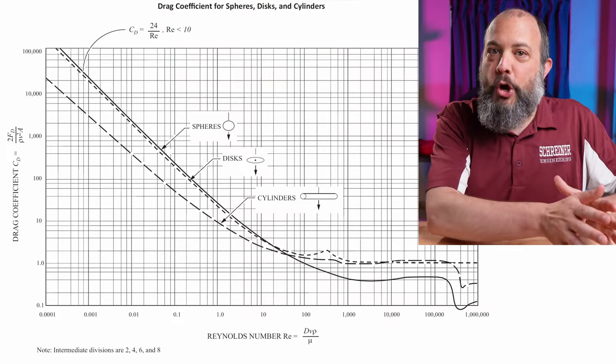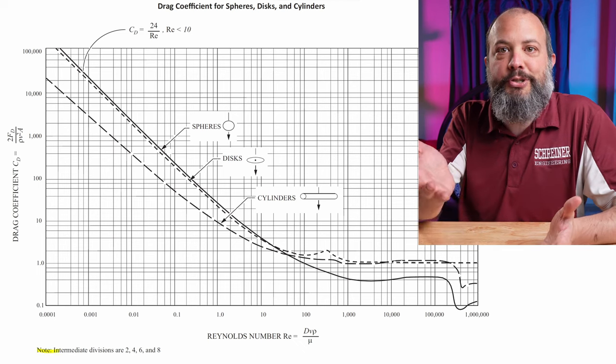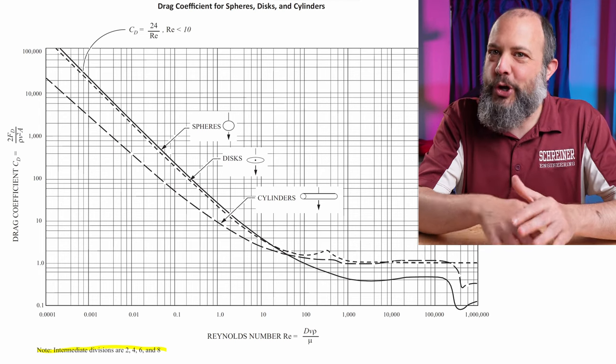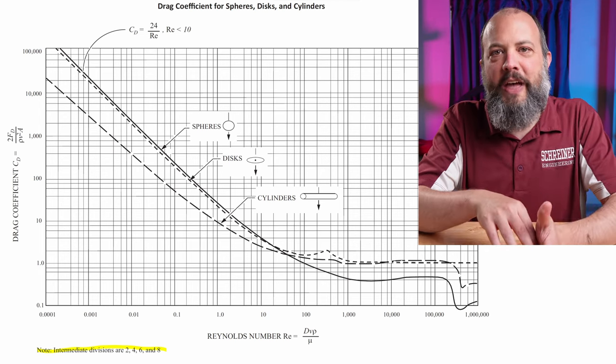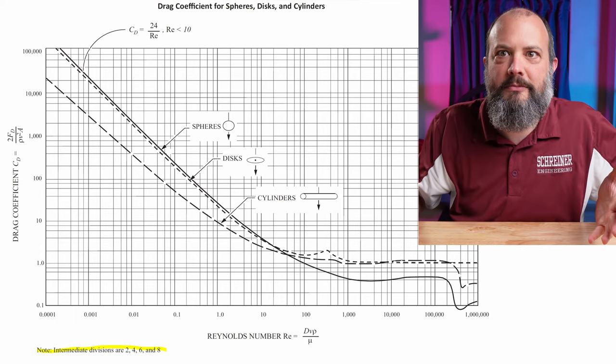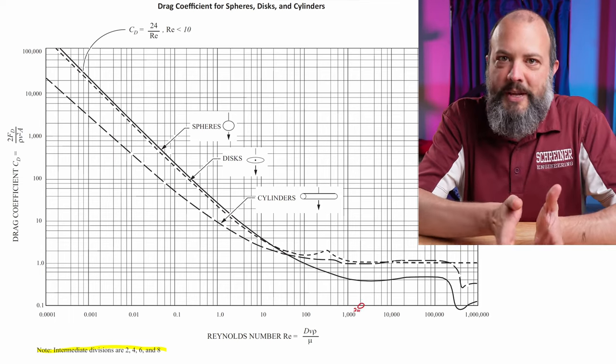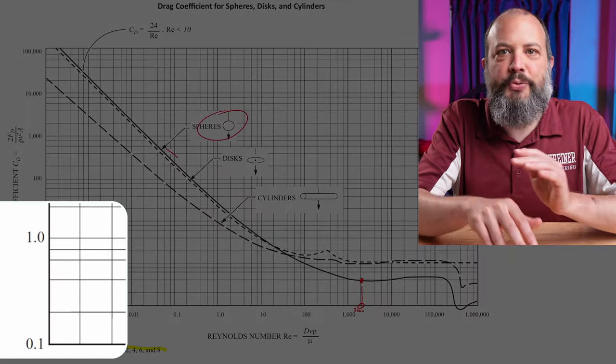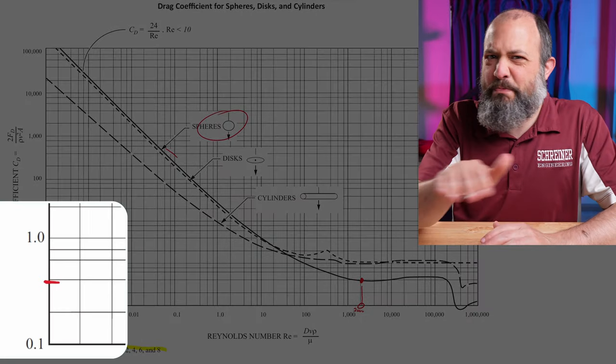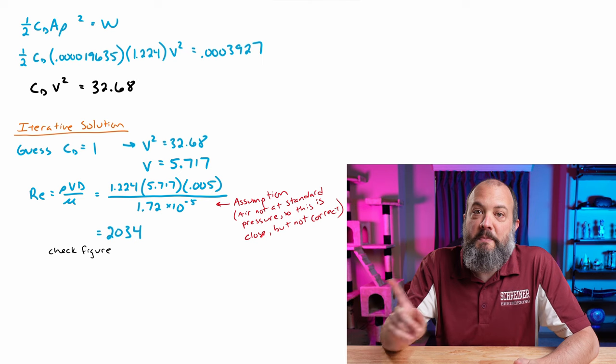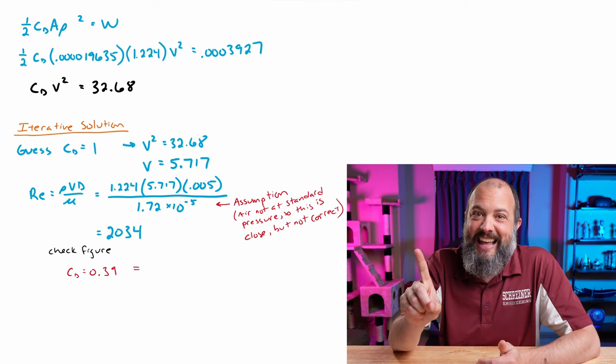You can find a drag coefficients for spheres table in the FE reference manual, which is one I have up on the screen here. Your textbook probably has one also that looks kind of similar to it. The axes for both of these are logarithmic. So each of these lines between 1000 and 10,000 are two, four, six, and eight. So it goes 1000, 2000, 4000, 6000, 8000, 10,000. So our number is right around 2000. So basically goes straight upwards. And on this figure, the sphere is the solid line. So I trace that over to the left and it looks like it's just below that horizontal line. So we'll call this about 0.39 for the drag coefficient. My original guess was a drag coefficient of one and we got a drag coefficient of 0.39. That is not close enough.